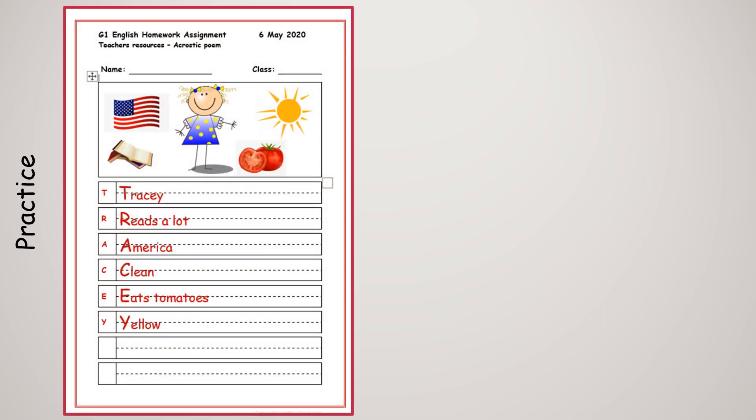Here is a copy of my acrostic poem. T for Tracy. R for 'reads a lot.' A for 'America,' because I love travelling there. C for 'clean,' because I like to be clean. E for 'eats tomatoes,' because I love tomatoes. And Y for 'yellow,' because that's a colour that I really like.